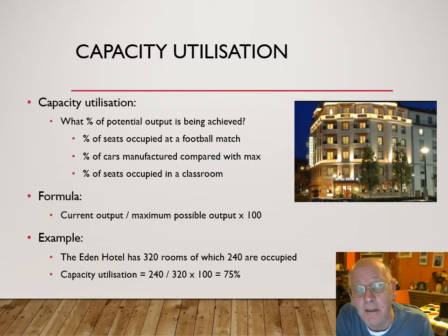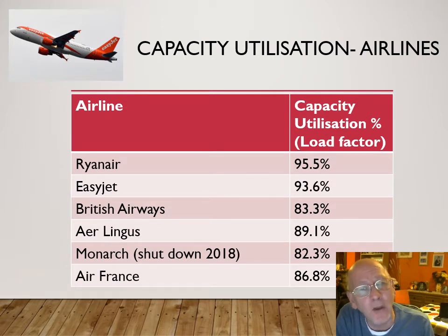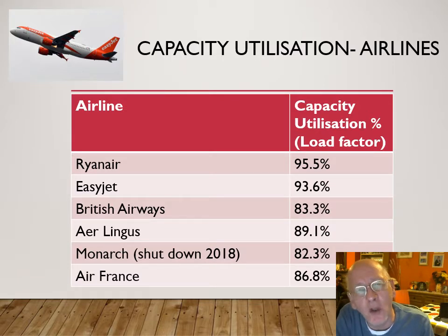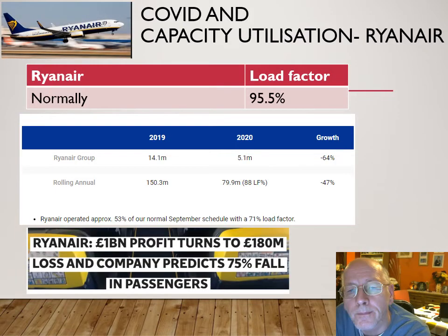The term for capacity utilization used in the airline industry is the 'load factor' — the percentage of seats on an aircraft that are actually filled. Looking at some figures: Ryanair over 95%, easyJet over 93%, British Airways about one in six seats unfilled — not much of a problem for BA since their profit margins are higher. Monarch was running at 82.3% before it shut down, and Thomas Cook was also relatively low before it shut down.